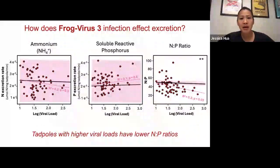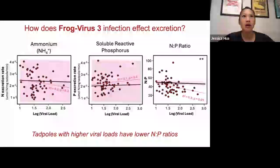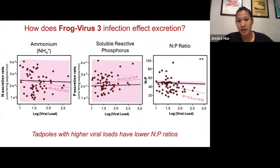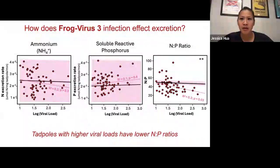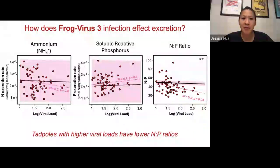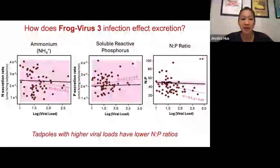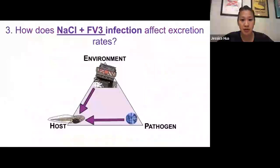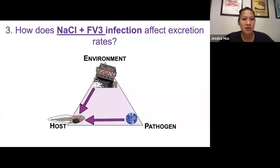What might lower NP ratios mean? NP ratios help us think about what types of communities might be facilitated. We know that below 20:20 NP ratios, this is when blue-green algae is facilitated over green algae. So taken together, alone, sodium chloride contamination and Frog Virus 3 infection don't have much of an effect on excretion rates. These factors alone don't seem all that impactful to tadpoles' roles in moving nutrients. But in nature, these factors are interacting in ways we often don't measure.